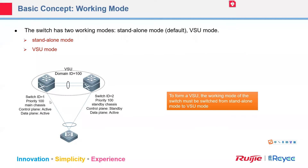About the VSU parameters — in the same VSU we share the same domain ID. One switch only has one domain ID, for example domain ID 100. The switch ID is one, and switch IDs should be different within the same domain. The priority (default 100) determines who becomes master or standby. About the control plane and data plane — the control plane does calculations like routing tables, MAC address tables, and ARP tables. The data plane forwards traffic according to those tables.